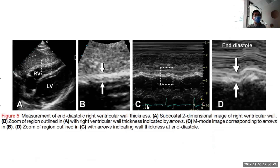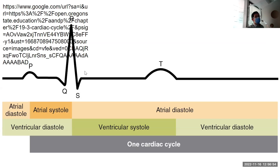This is how you measure RV thickness. Ideally you do it when your imaging plane is perpendicular — so you do subcostal. Use M-mode to do your thickness measurement, which is important for distinguishing acute versus chronic. EKG gating is really important here: ventricular systole is from the R wave to the end of the T wave. You measure wall thickness in diastole, which is right before that R wave.